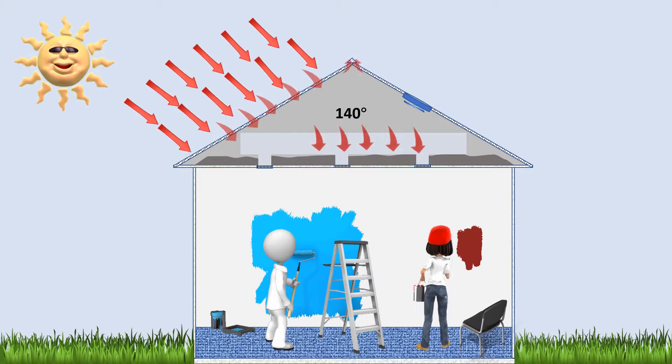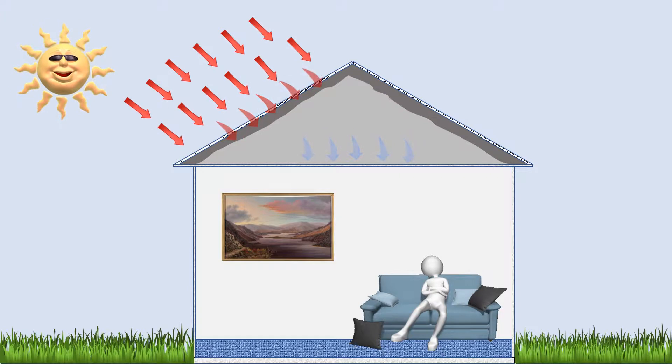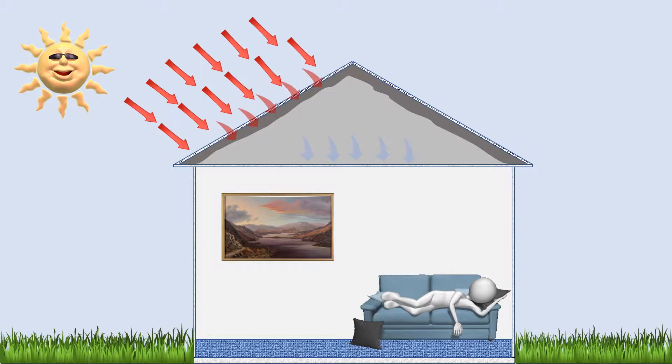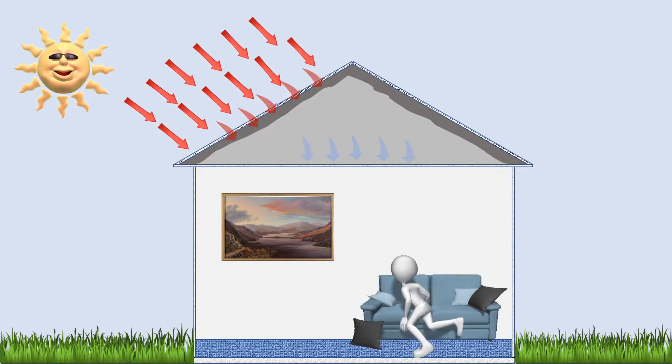Now let's take a look at option two. If we put the insulation under the roof deck, which is typically done with a spray foam material, we stop the heat—or at least the majority of it—from even getting into the attic. On top of that, if the duct work is in the attic, the attic will be much cooler, greatly reducing the load on the duct work.